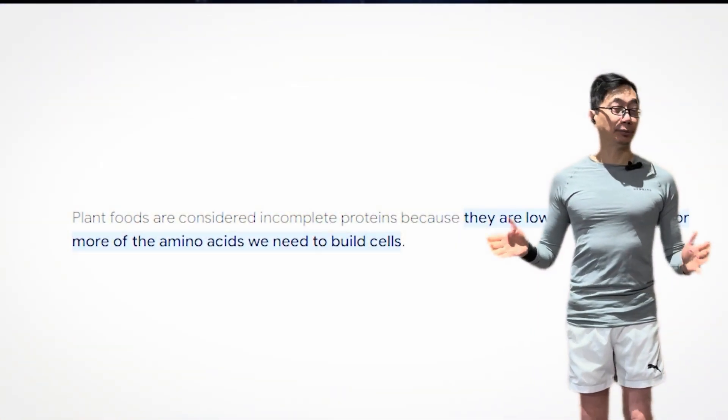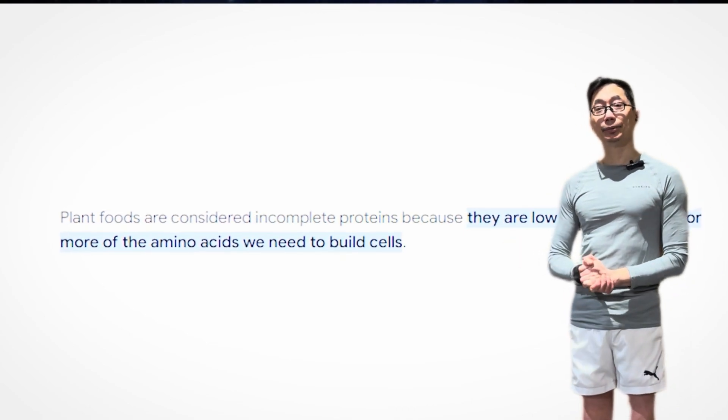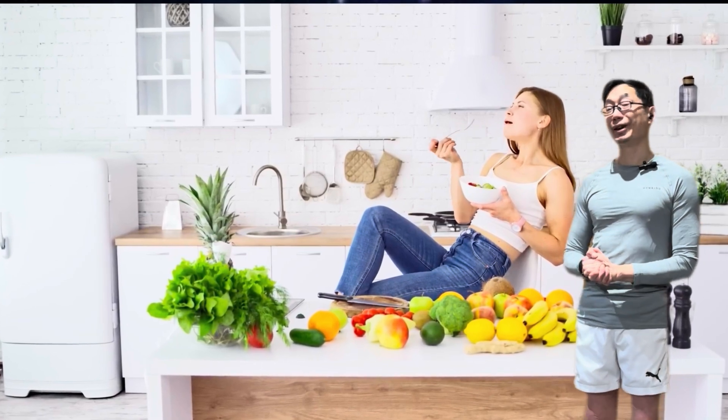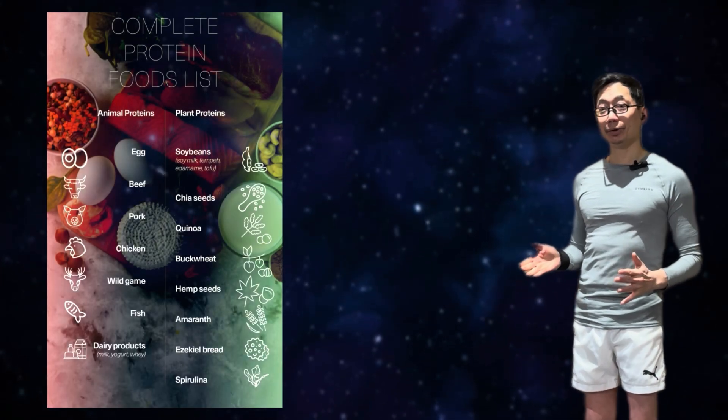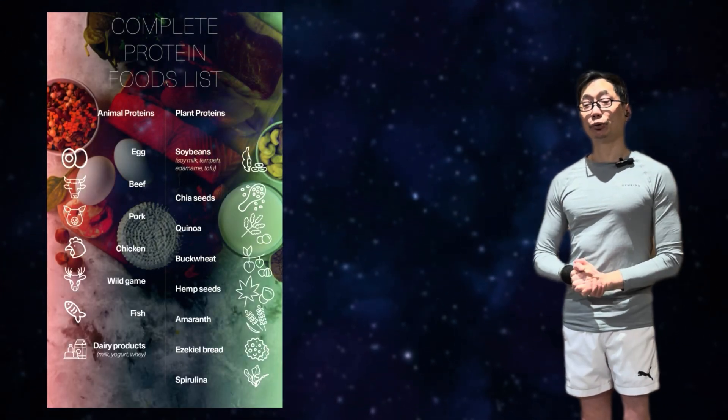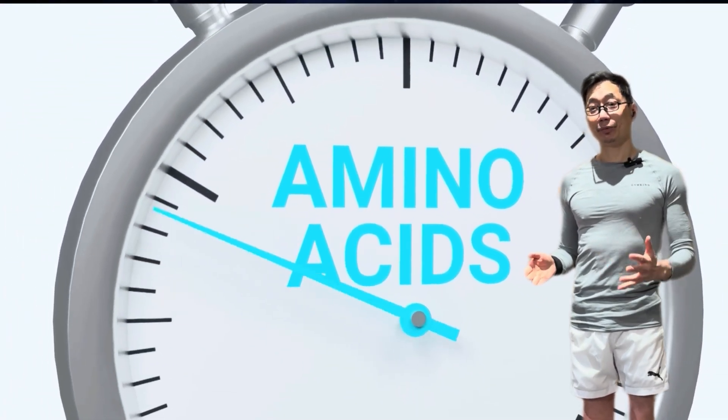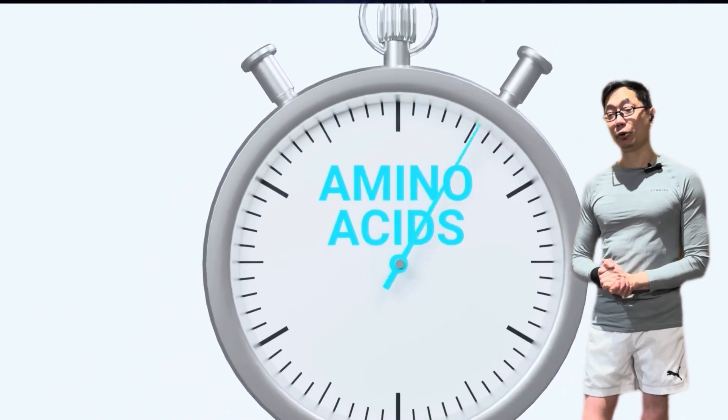So by comparison, plant proteins may lack one or more of the indispensable amino acids or the proper concentration and are therefore sometimes referred to as incomplete proteins. Now, this does not mean that someone that is a vegan or vegetarian can't get all the indispensable amino acids. They just need to get them from multiple sources. So indispensable amino acids are amino acids that must be provided by the diet because the body cannot synthesize them on its own.